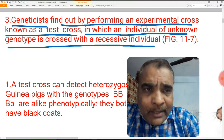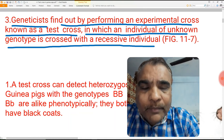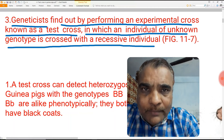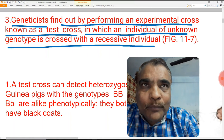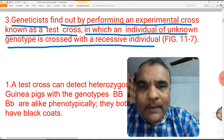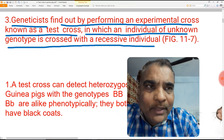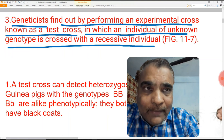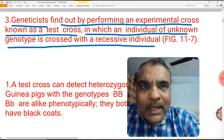In this case, we want to find out for the coat color whether the guinea pig has a homozygous allelic combination BB or the heterozygous one Bb. To find out, we perform the test cross: this black coat guinea pig is crossed with a recessive individual, which has a white or brown coat color.